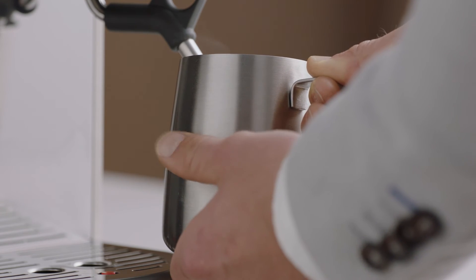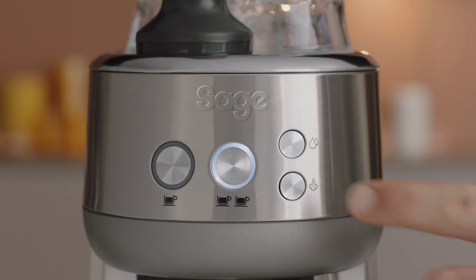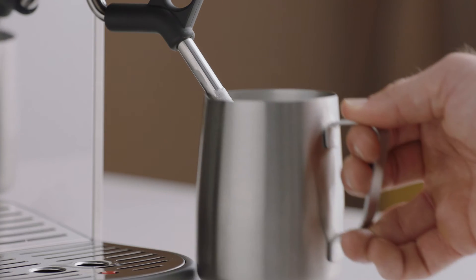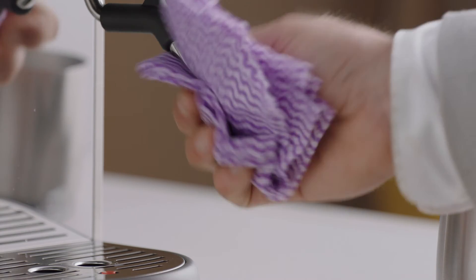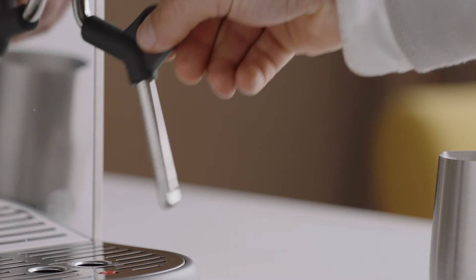Once the desired temperature is reached, press the steam button before taking the wand tip out of the milk. Set the jug to one side. Wipe the wand and tip with a damp cloth. Position the steam tip above the drip tray.